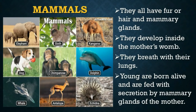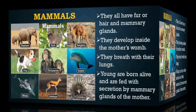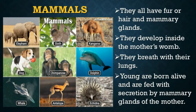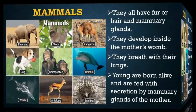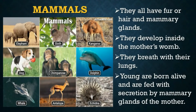Mammals represent the most advanced group. They all have fur or hair and mammary glands. Mammals are usually born in a whole form; they develop inside the mother's womb. Mammals are the vertebrate group to which humans belong. They breathe with their lungs. Young are born alive and are fed with secretion by mammary glands of the mother. Mammals manage to live almost everywhere. Some examples are dogs, cats, rabbits, dolphins, whales, and bats.